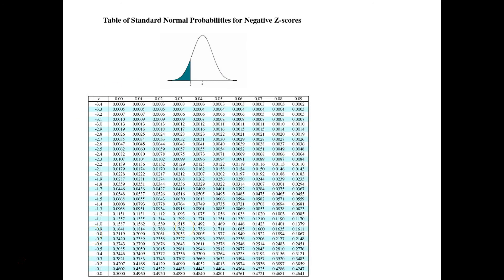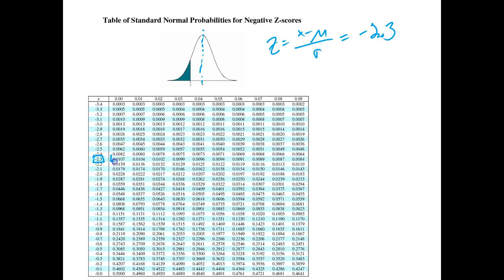You also have a sheet in your packet with negative z-scores. A negative z-score means you're on the left side of the mean, so all those values should be less than 50%. For example, if we get negative 2.3 from our z-score calculation: find negative 2.3 on the negative chart, go to the 0 column. It looks like there's about a 1% chance — the area to the left of negative 2.3. That small value makes sense since negative 2.3 is pretty far out.